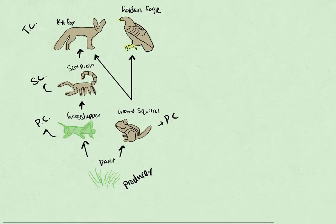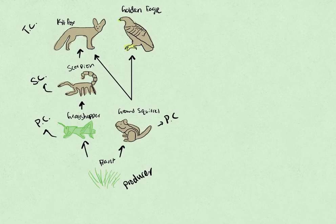Now let's look at the other part of the food web. We have the ground squirrel, which is also a primary consumer. But when it's consumed by the golden eagle, the golden eagle becomes the secondary consumer. And since the kit fox is also preying on the primary consumer, it is also a secondary consumer in this scenario.